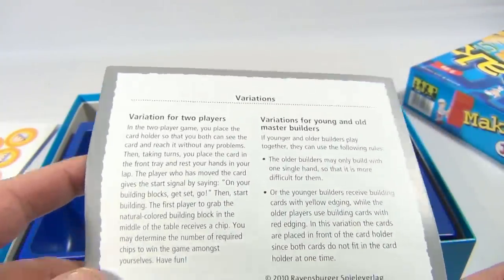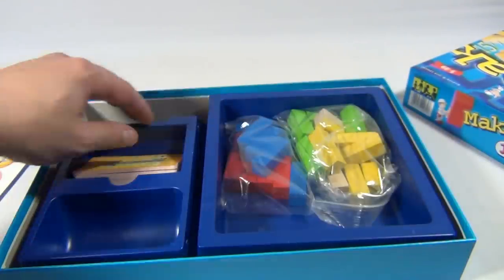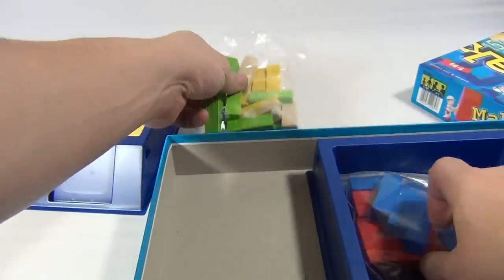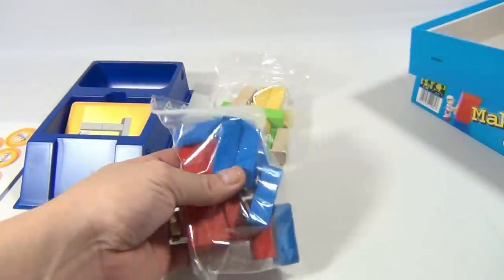Okay. And then variations of the game. The pieces, the cards. Here's the tray they were talking about. And here's the blocks. So there's the five colors.